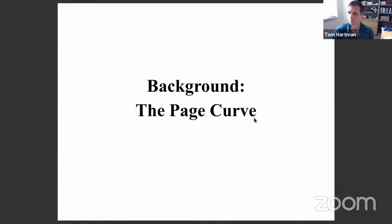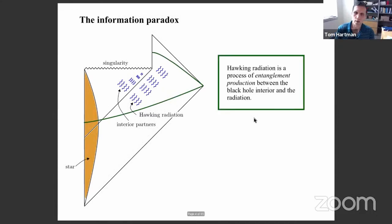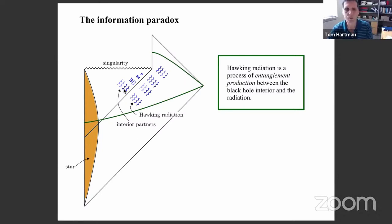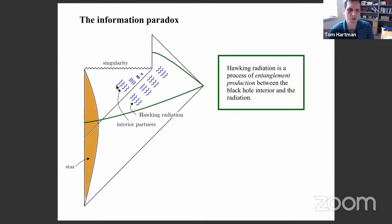First, the page curve — since Rob already showed this, I'll go quickly. The important thing about Hawking radiation I'm going to rely on is that Hawking radiation is a process of entanglement production between the black hole interior and the radiation. The quantum state of the fields on a full nice slice that goes into the interior is pure. The reason the Hawking radiation looks thermal is that we have access only to one piece of that slice, and it's by tracing out the interior that it becomes thermal. The paradox can be phrased in terms of the unreasonably large entanglement between the black hole interior and the radiation.